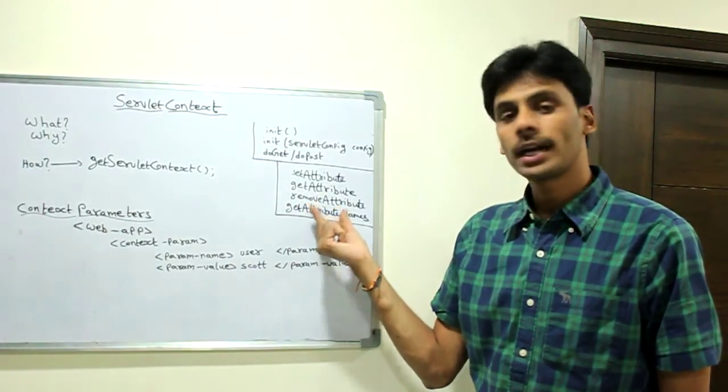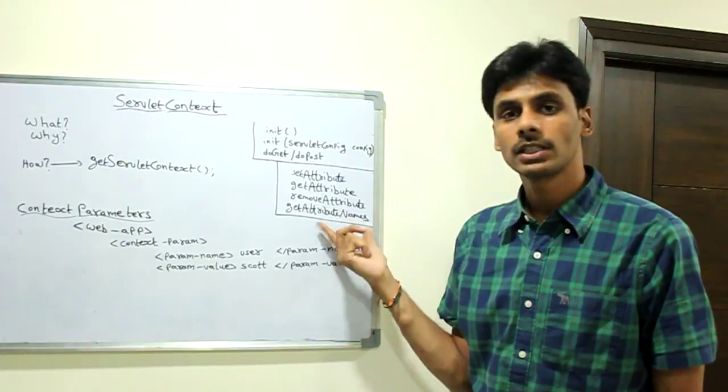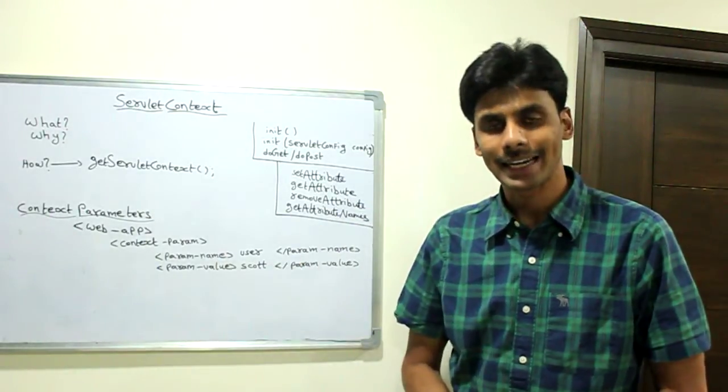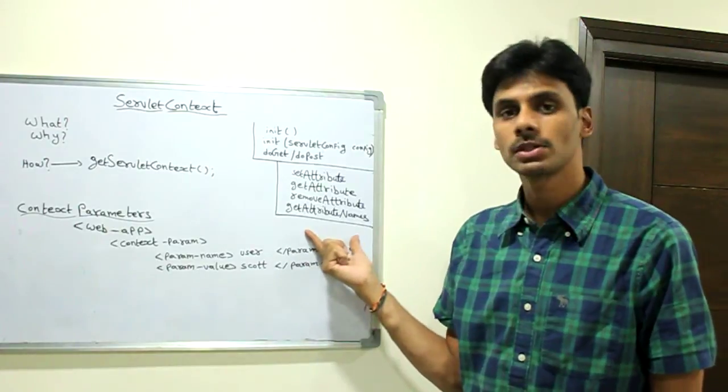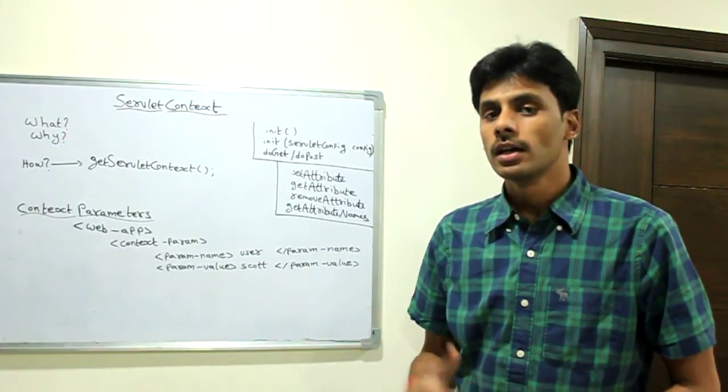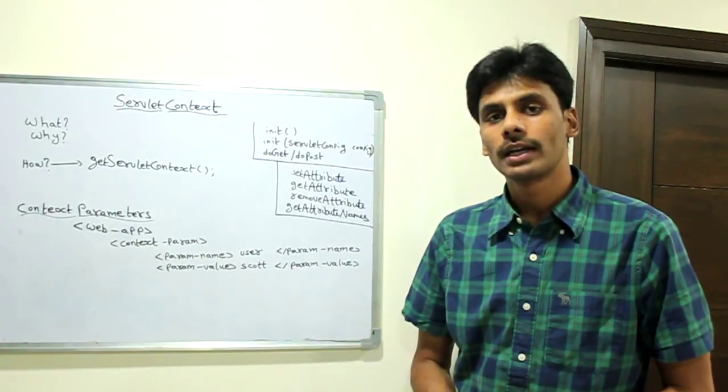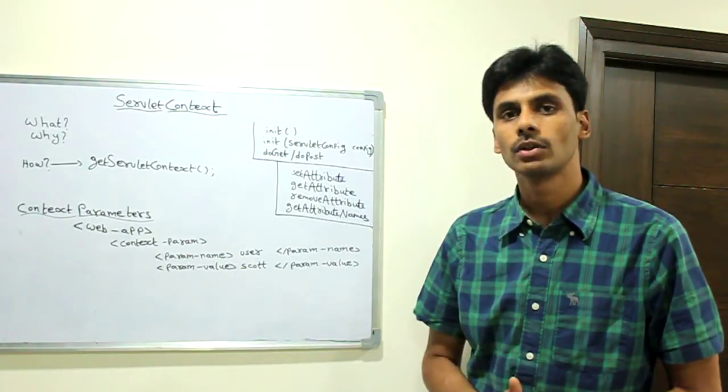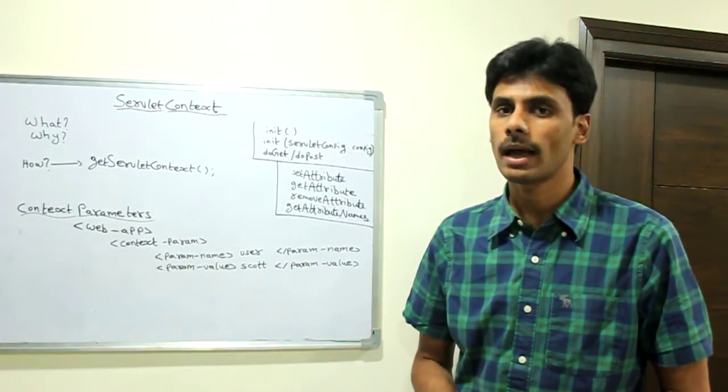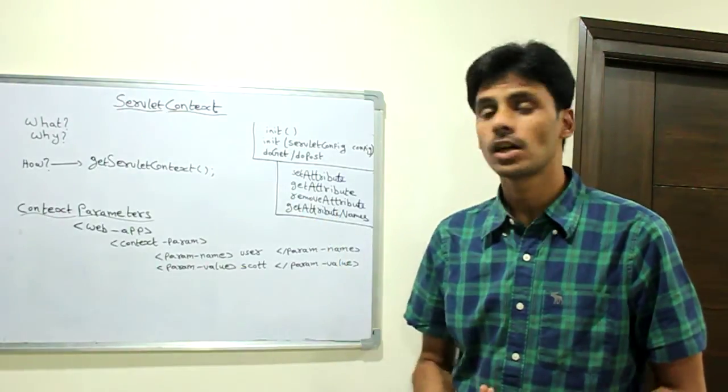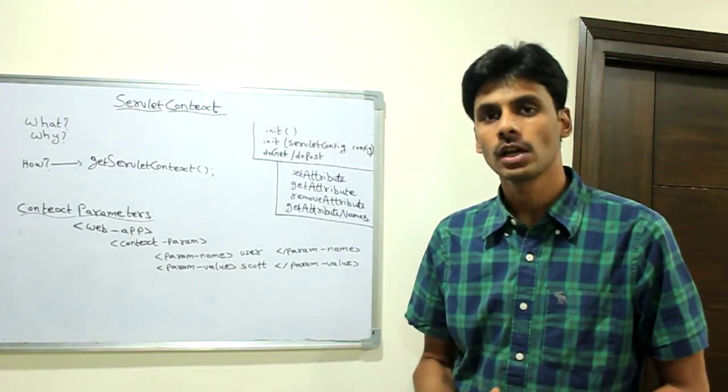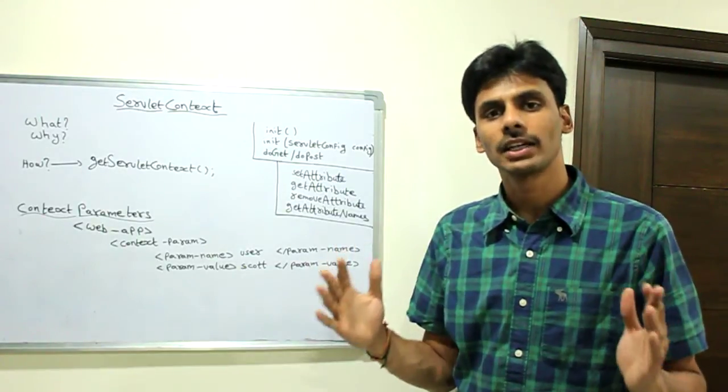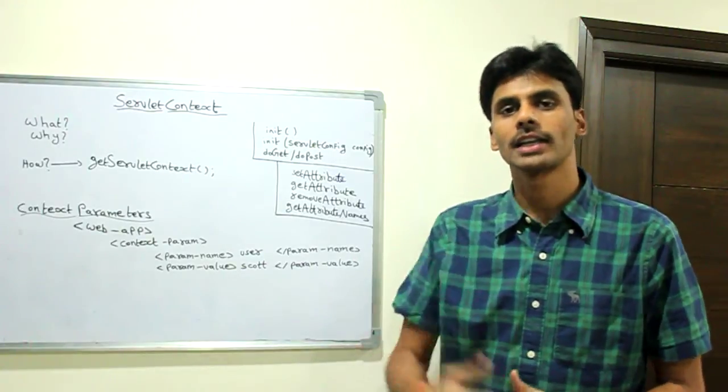Similarly, we have removeAttribute and getAttributeNames methods. RemoveAttribute allows you to remove the attribute that you set on the servletContext, and getAttributeNames retrieves all the names inside the servletContext. You can iterate over these names and get all the values you have been setting in your application. The servletContext is also famously known as the application scope because whatever you set into the servletContext is for the entire application, not at a request level, not at a session level.